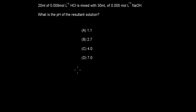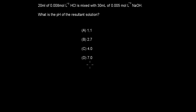This is the last question: 20 mL of 0.08 mol/L hydrochloric acid is mixed with 30 mL of 0.005 mol/L sodium hydroxide. What is the pH of the resultant solution? A) 1.1, B) 2.7, C) 4.0, D) 7.0. Pause and attempt.